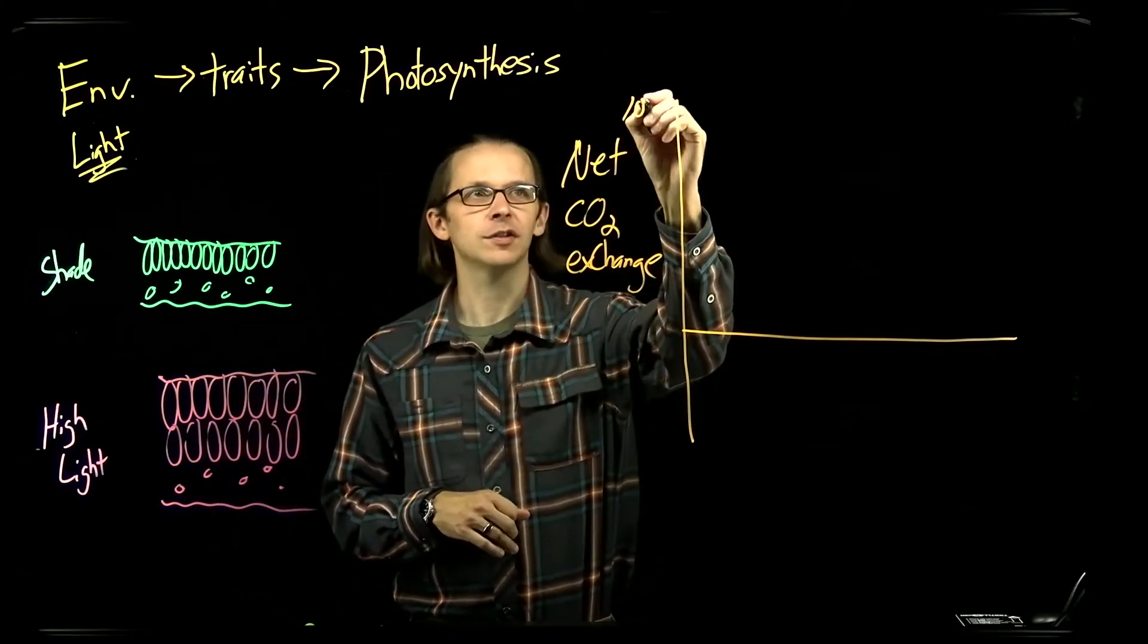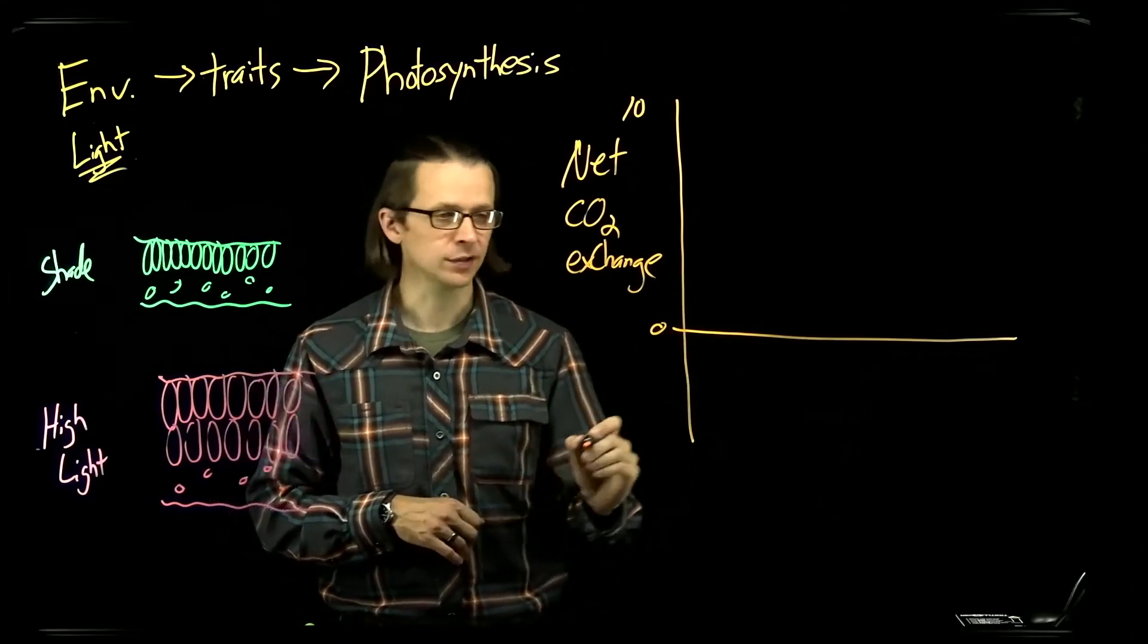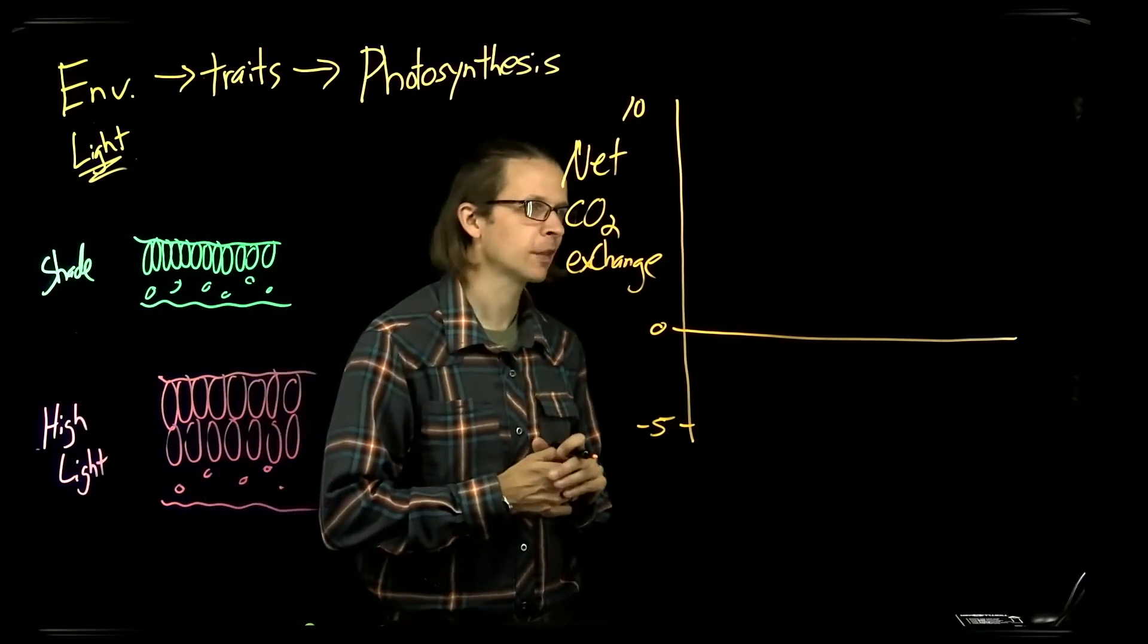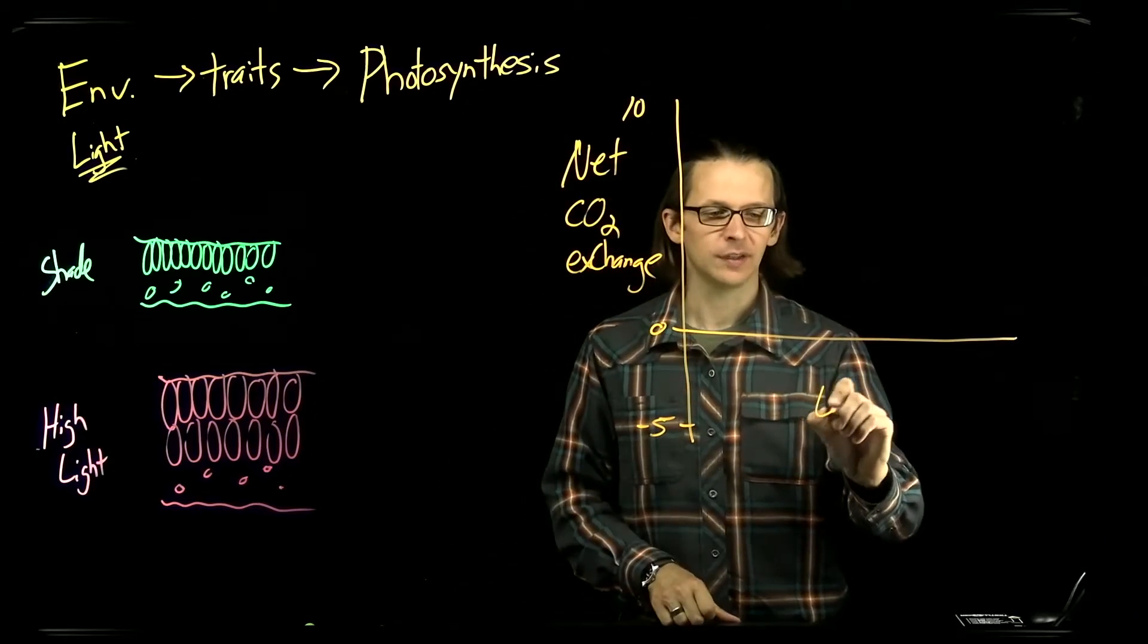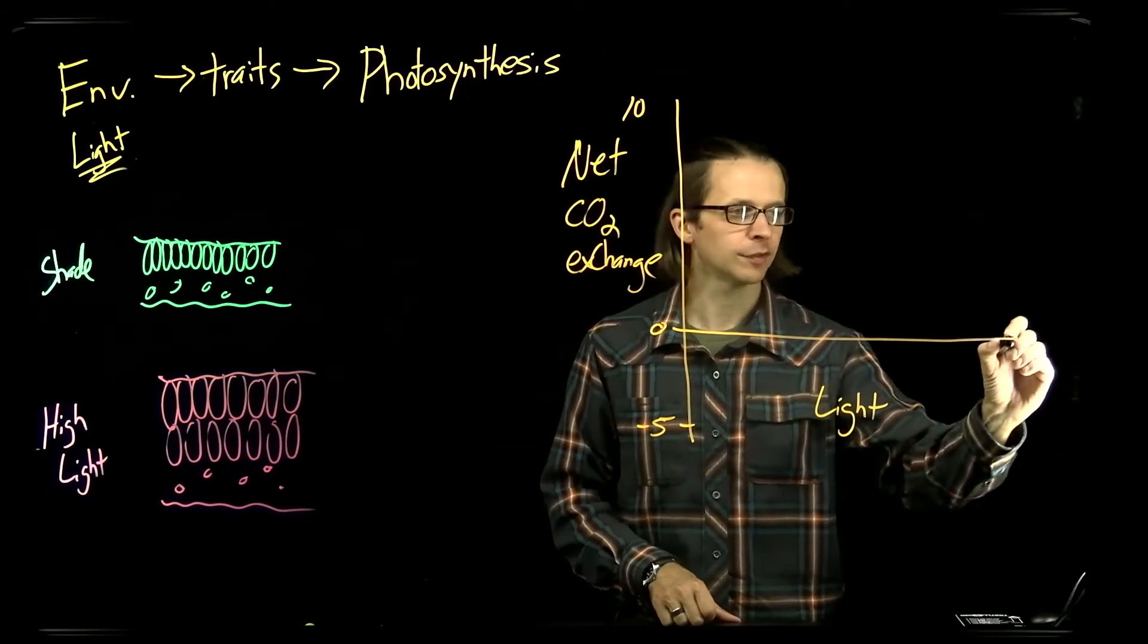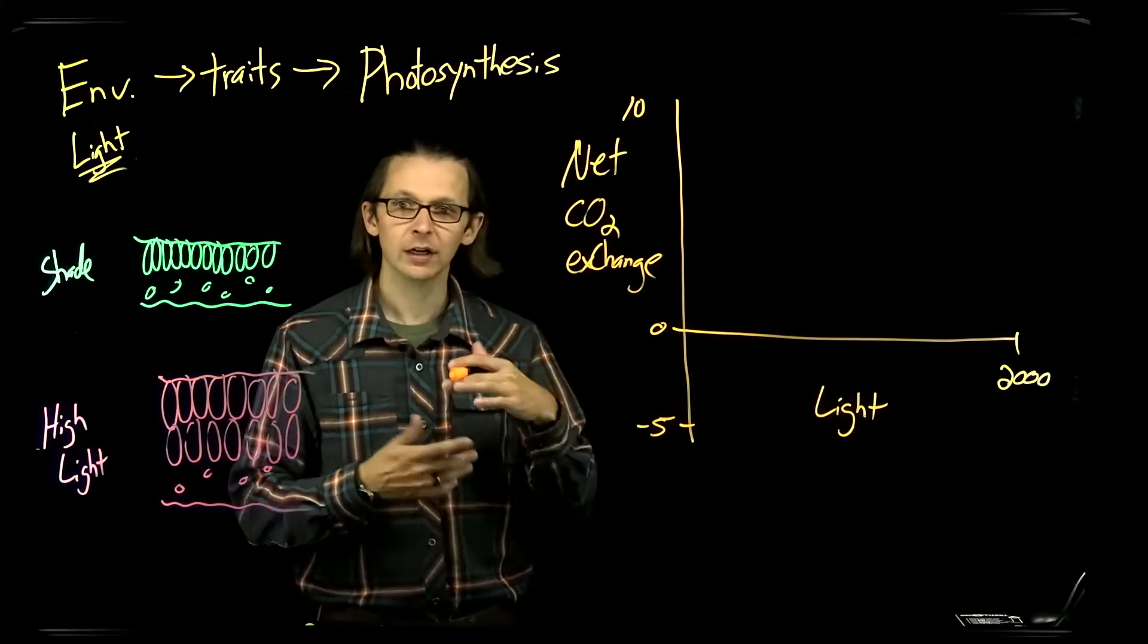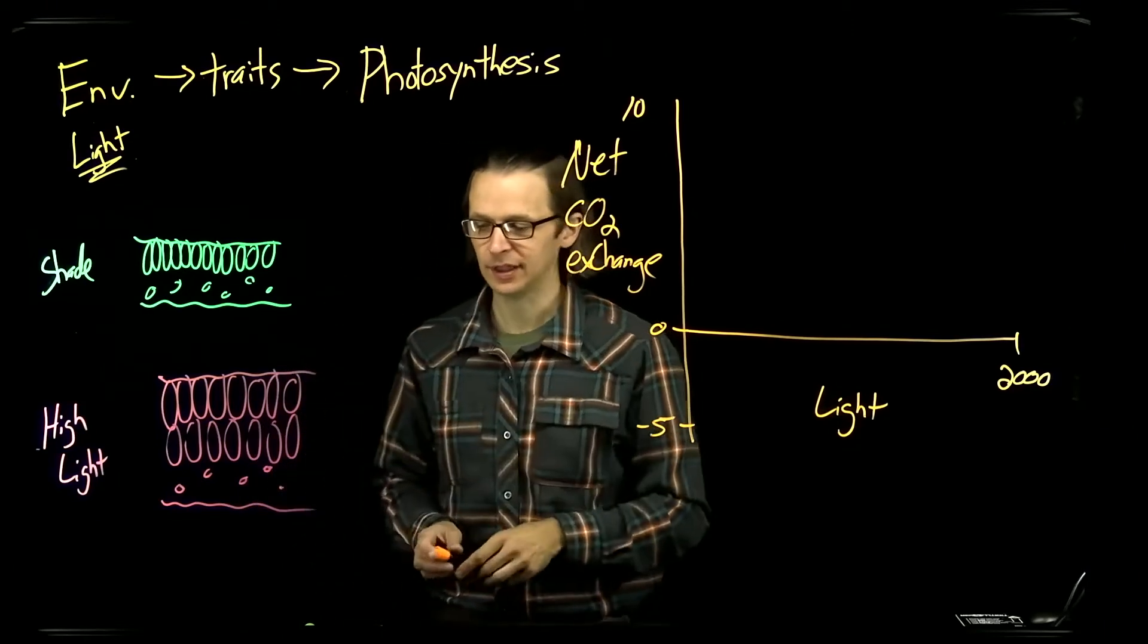Another word for the net CO2 exchange across the surface of a leaf is the rate of photosynthesis. It varies from high values of, say, 10 down to low values like 0, and actually goes to negative values, say negative 5, when leaves are in the dark. Leaves are in the dark a lot, every night, for example. And if we look at the relationship between net CO2 exchange and the availability of light, varying from zero values in the dark up to full sun at about 2,000 micromoles of photons per meter squared per second, there are characteristic relationships of photosynthesis with light that are strongly different between shade and sun leaves.